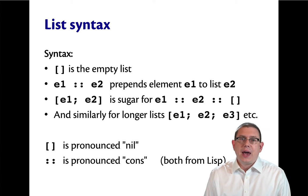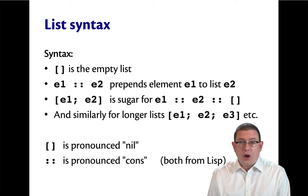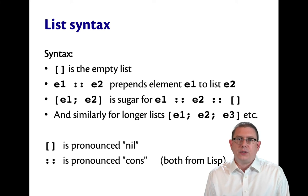The other syntax that we originally saw for lists with square brackets and semicolons is itself really syntactic sugar for using nil and cons. So anywhere you've written E1 semicolon E2 as a list, that's really sugar for E1 cons E2 cons nil. And the same for longer lists. You just keep consing onto the beginning of the list.